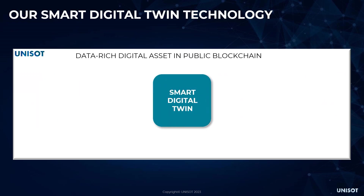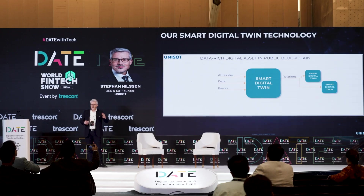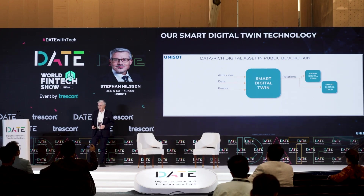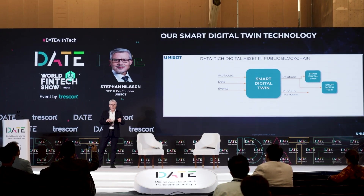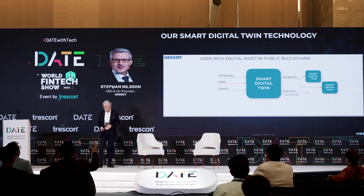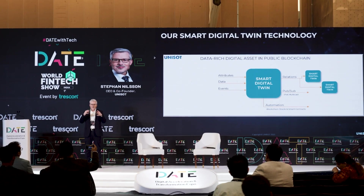What we call a smart digital twin is also known in the crypto industry as an NFT — a token in the blockchain. We try to stay away from the crypto industry terminology, so we call it a smart digital twin. It is a digital object in the blockchain where you can add attributes, data, events, and relations to other digital twins — child twins and parent twins — building a whole DAG network of the entire supply chain. We can have publish-subscribe functionality by combining the blockchain protocol with the new IPv6 internet protocol, plus smart contracts to create automated business processes.